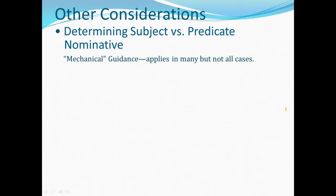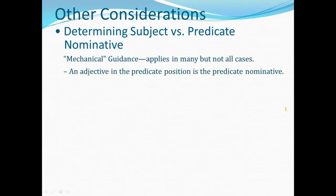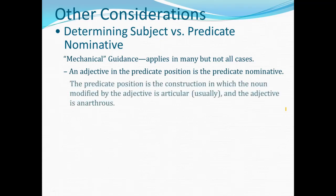There is also some mechanical guidance. The guidance from Wallace and myself is more in the logical area, but there are grammatical mechanics that can help in many cases. An adjective constructed in the predicate position is going to be the predicate nominative. The predicate position involves a substantive that the predicate adjective modifies, and when that adjective is in the predicate position, you can count on it being the predicate nominative.